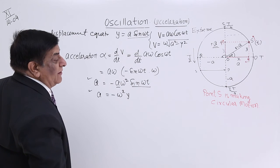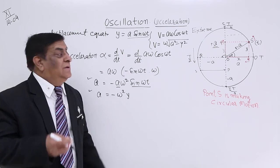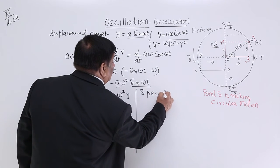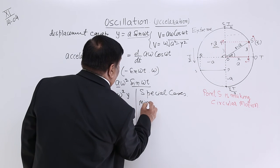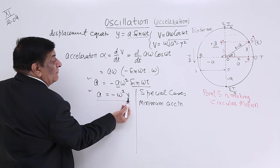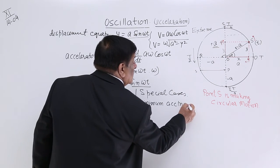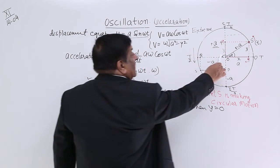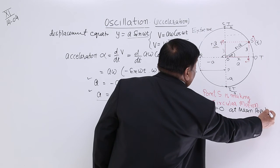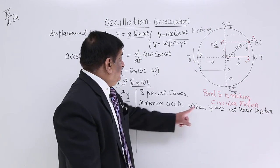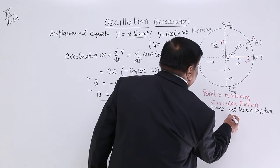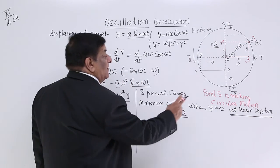Now let us see the minimum and maximum values of acceleration and where they occur — special cases. For minimum acceleration: when y = 0, acceleration is 0. And y = 0 at the mean position. So at the mean position, acceleration is minimum, equal to zero.